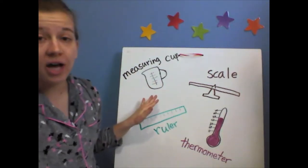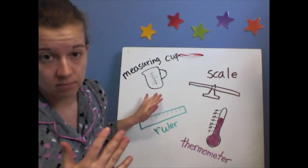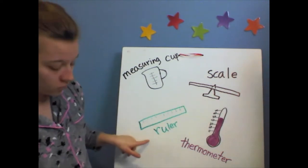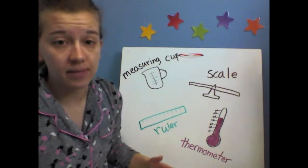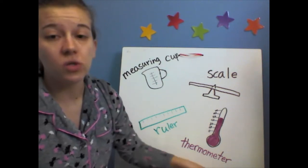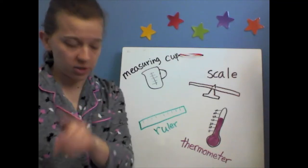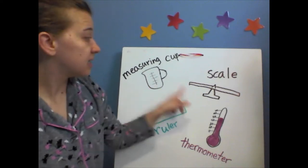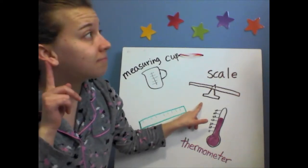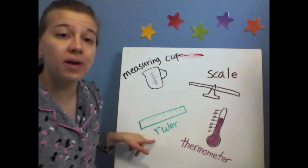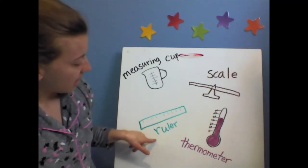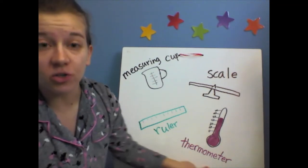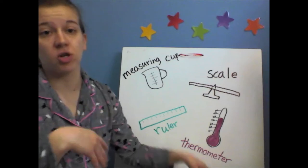Measuring cups are used for measuring liquids and measuring how much something holds. Scales are used for measuring weight. Rulers are used for measuring length — or it could be height as well, so how long or how tall. And thermometers are used for measuring temperature, how hot or how cold.